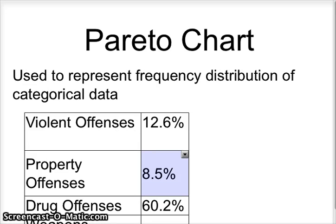This is a video on how to construct a Pareto chart. This is used to represent frequency distributions of categorical data, or qualitative rather than quantitative data. Here what I have are some examples of the population of federal prisoners and what they have done.